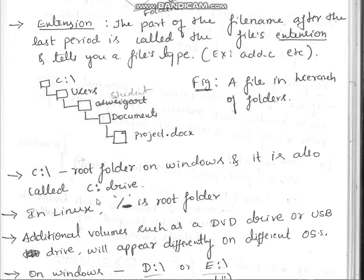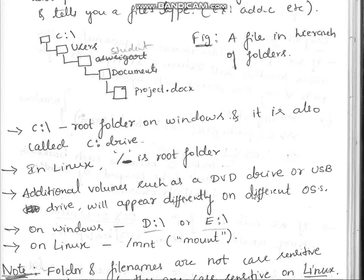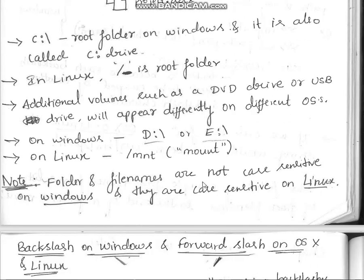On Windows, 'C:\' always represents the root folder, also called the C drive. On Linux, the forward slash '/' is the root folder — it is the parent of all files on the computer. Additional volumes such as a DVD drive or USB drive appear differently on different operating systems: on Windows we have D, E, F drives; on Linux we use '/mnt'. Also note that folder and file names are not case-sensitive on Windows but are case-sensitive on Linux.